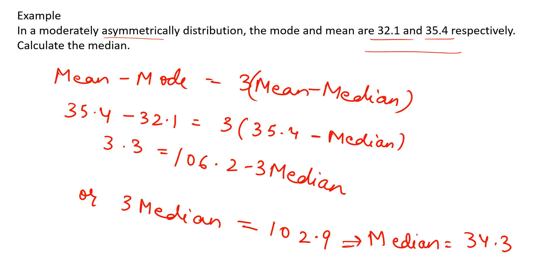Whenever we have any two of mean, median, or mode given, we can find the third value using this relation. Remember, this is an empirical result — a generalized result from data analysis. It is not necessary that if you have a specific data set and check this relation, it will always satisfy exactly, because it is an approximate relation found using various data sets. It gives approximate, not exact, values.